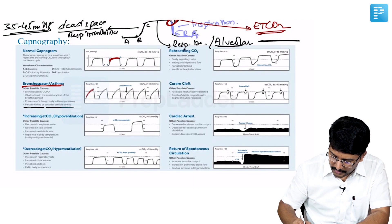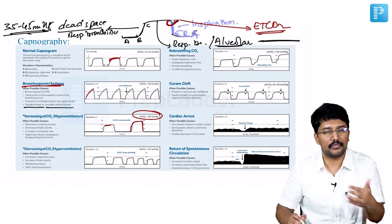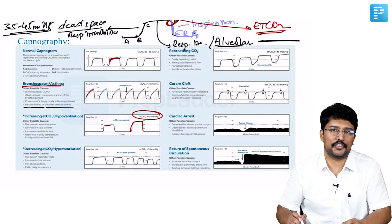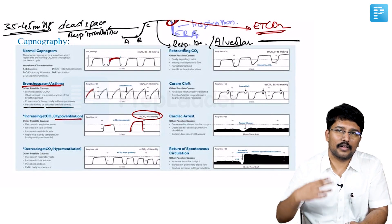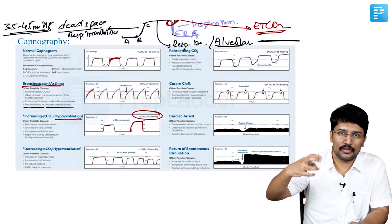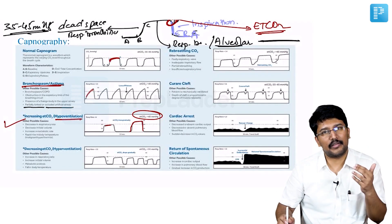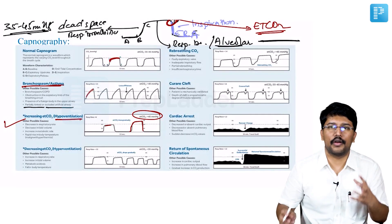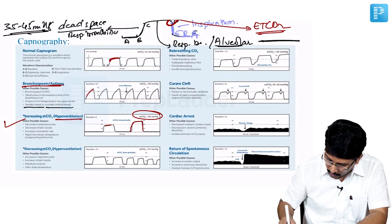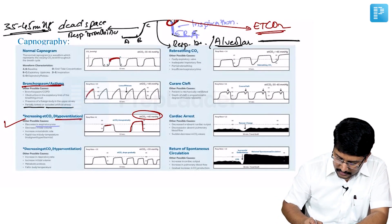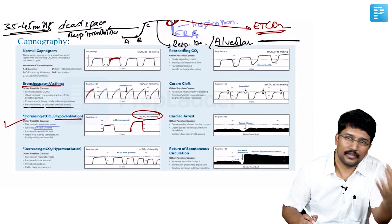If you notice that with time, your ETCO2 is increasing, what does that mean? That means hypoventilation. Hypoventilation because ventilation is not adequate. With every breath, more and more carbon dioxide is there for elimination. What does that mean in ICU setting? That means you have not set the respirator rate adequately on ventilator, or you have not set adequate tidal volume.